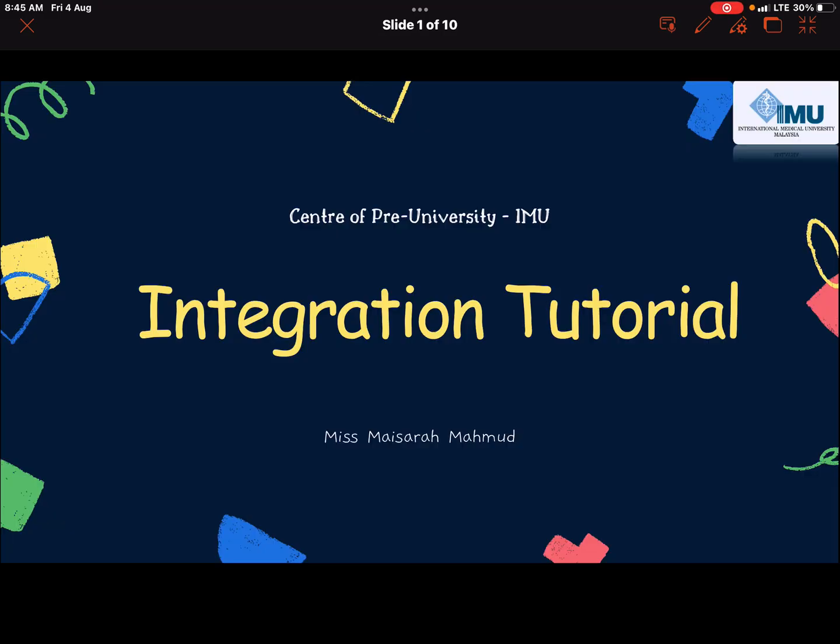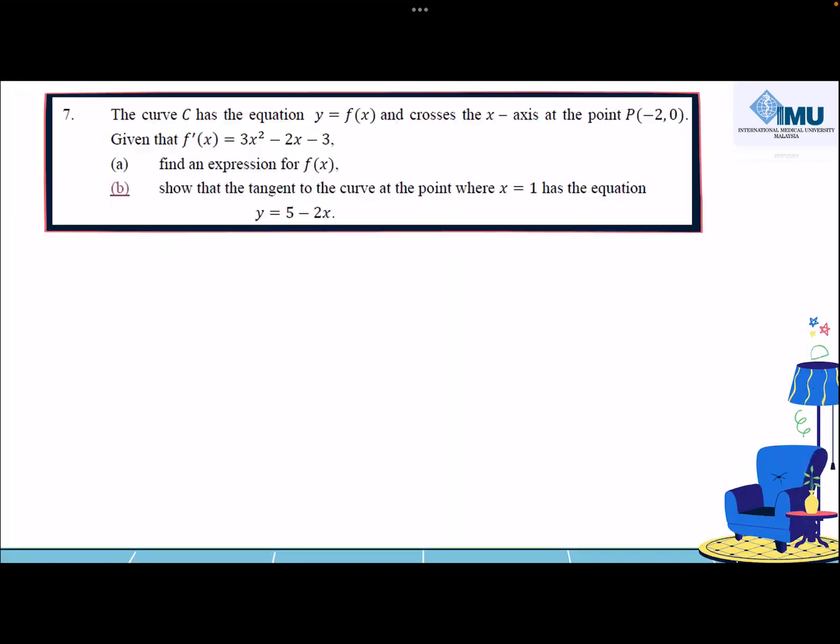Mathematics 2 Chapter Integration Tutorial Question 7b. The curve C has the equation y = f(x) and crosses the x-axis at the point P(-2, 0).